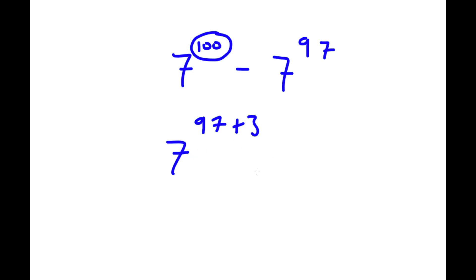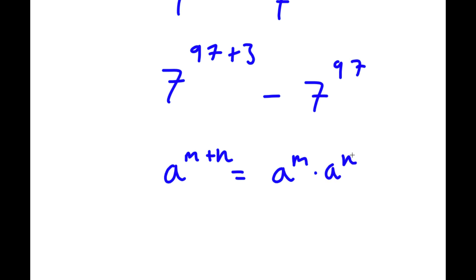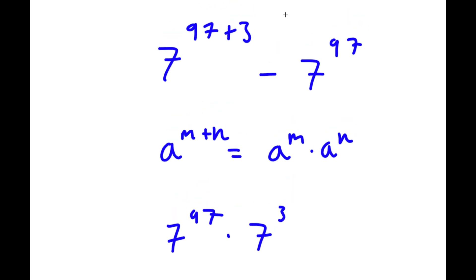So now I have 7 to the power of 97 plus 3 minus 7 to the power of 97. If I have something in the form a to the power of m plus n, this is equal to a to the power of m times a to the power of n. So 7 to the power of 97 plus 3 equals 7 to the power of 97 times 7 to the power of 3.